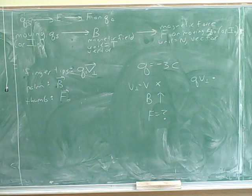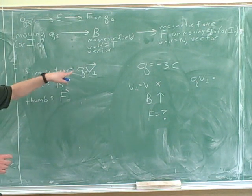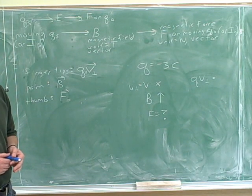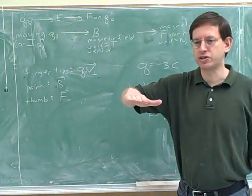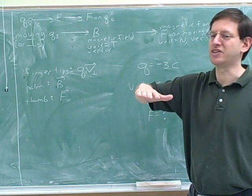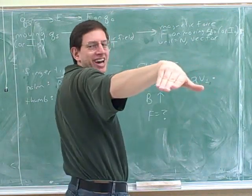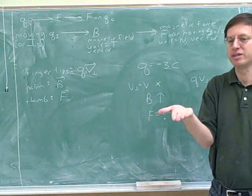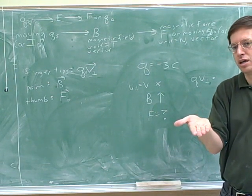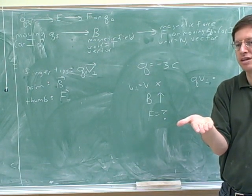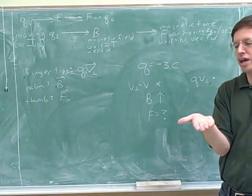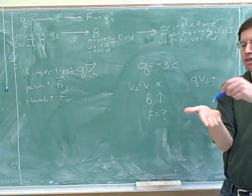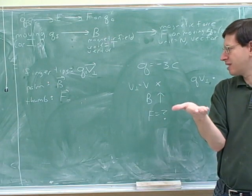We point our fingertips out of the board — like the tip of the arrow coming towards us. Then we point our palm in the direction of B, which is up. Then the thumb is pointing to the left. So: qv is pointing out of the page (fingertips), palm should be pointing up, and once we get the palm right, we double-check the fingertips. Then the thumb points to the left — that's the magnetic force direction.